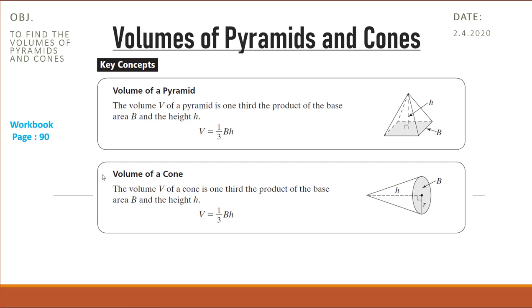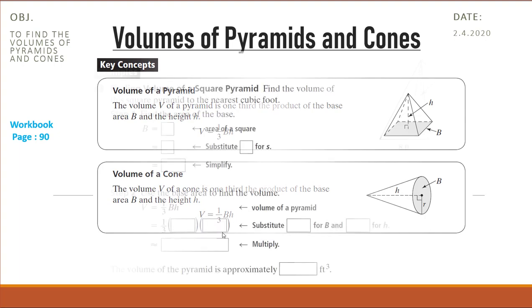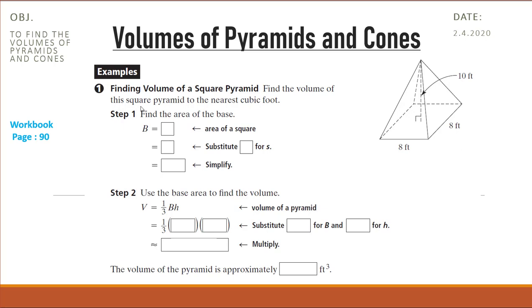Similarly, the volume of a pyramid is one-third base area multiplied by height. And also the same for a cone is one-third base area multiplied by height. In the first example, we have a square pyramid with base length. The length of the square is 8 feet and the height of the pyramid is 10 feet.